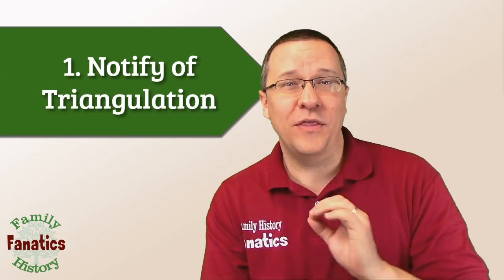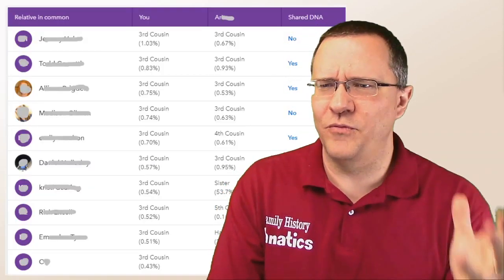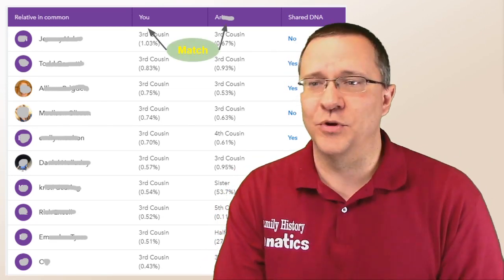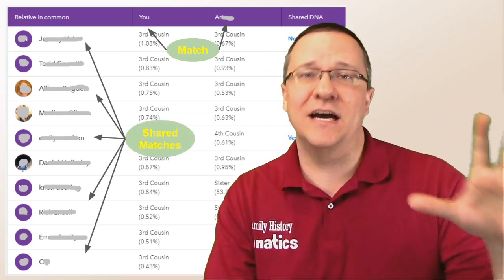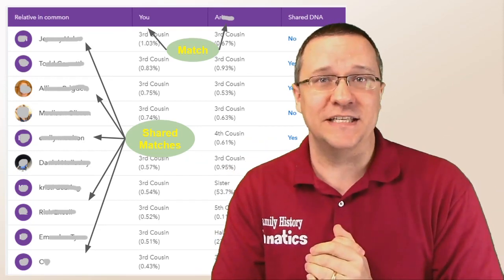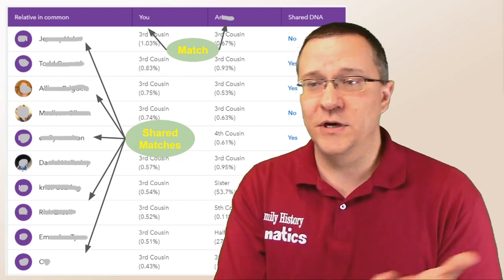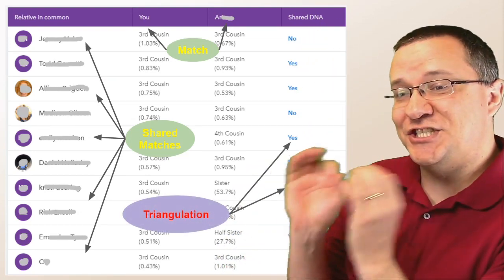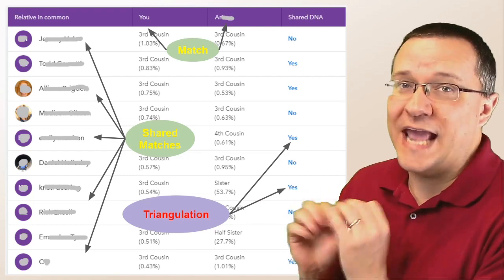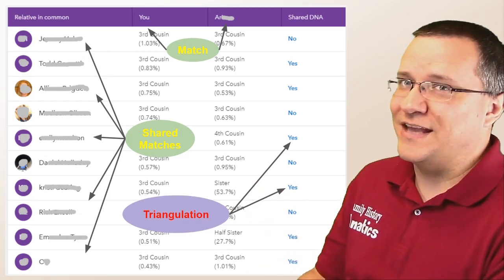The first criterion is whether or not the website notifies you about triangulation. On 23andMe, if we go to one of our matches and look at the shared matches list — anybody that both of us share some DNA with — you can see percentages in two columns showing how much each of us shares. But what's important is the last column: the shared DNA column, which tells us yes or no. Whenever it says yes, that means we have a triangulated segment. So 23andMe is telling us these three people together, they triangulate.